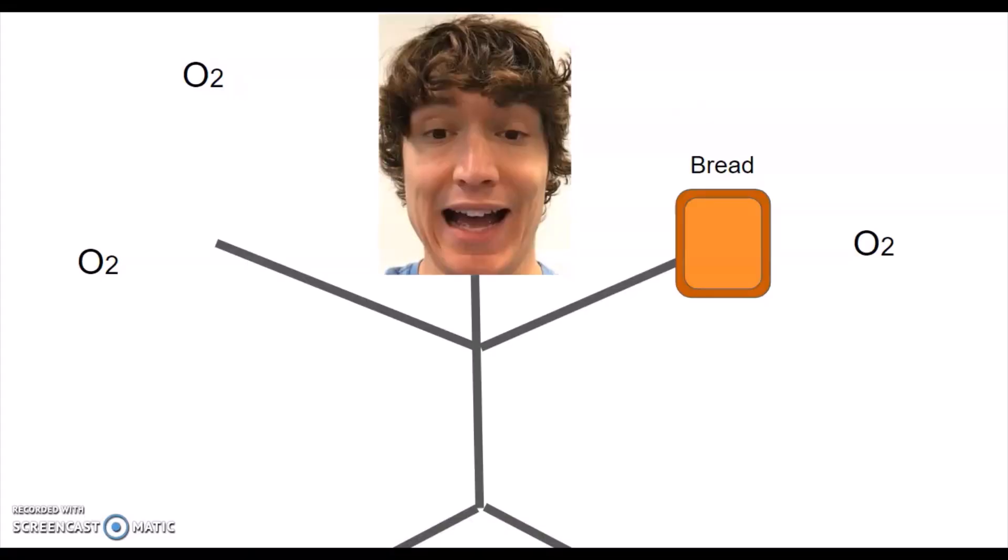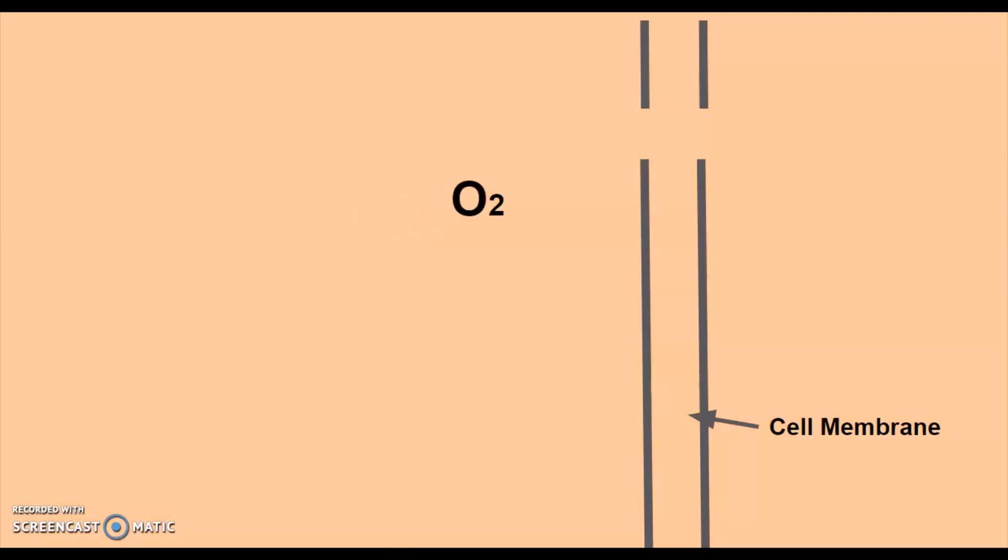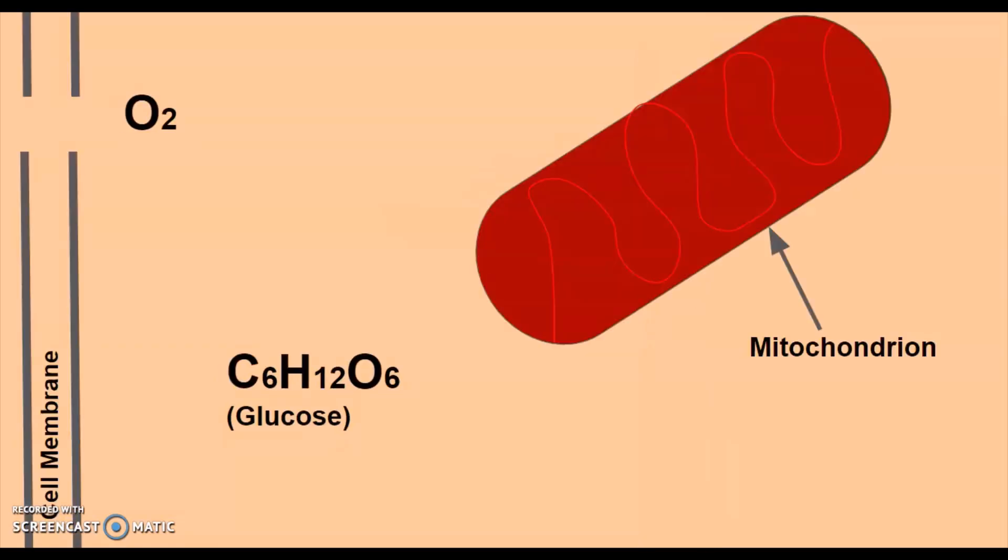Cellular respiration needs oxygen and carbohydrates. We breathe in our oxygen and we eat our carbohydrates. Our body then takes that oxygen and brings it into our cells where it meets up with the simple form of carbohydrates known as glucose.